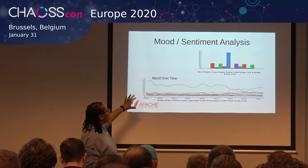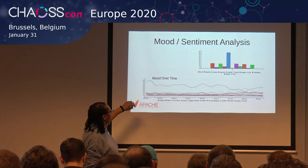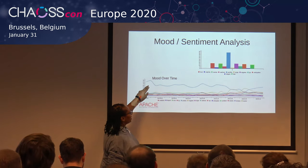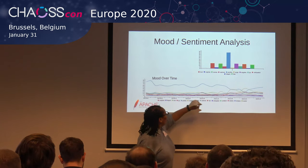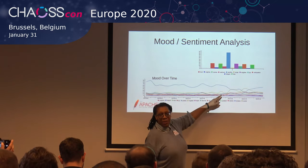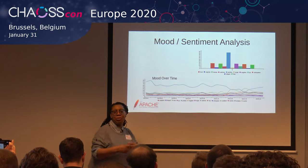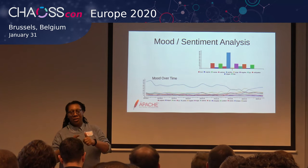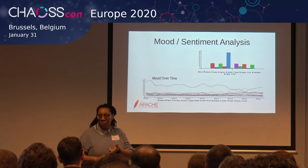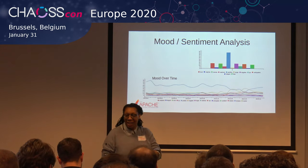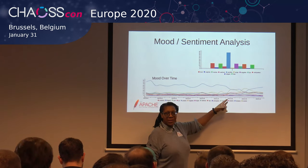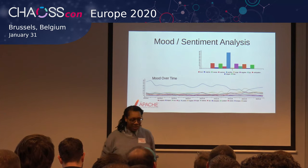Looking at the mood over time for the incubating project — and this was unexpected — the negativity is a bit lower. It started very positive but is actually going down. Is this a result of the project dealing with governance, the Apache Way, or releases? But again, you can go into the mailing list and see what is causing these sentiments.